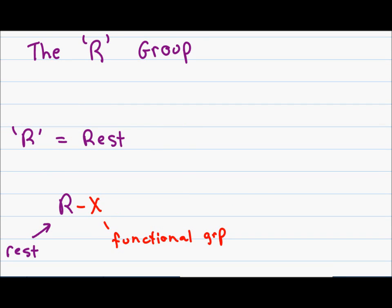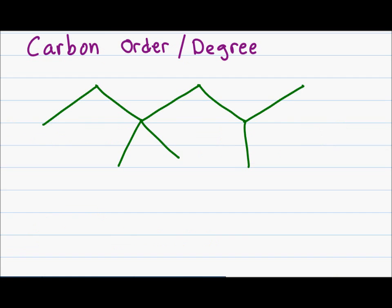If I have more than one R group in a chain, I differentiate them by putting an apostrophe on the R. So the first R group will simply be R, the second R group will be R', the third will be R'', and so on. In a carbon chain, you will have different types of carbon atoms. Every intersection, every angle, and every end of the molecule represent a carbon atom.